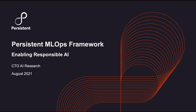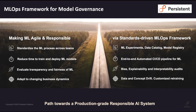At Persistent, we have been talking to customers about Responsible AI and its five pillars, namely: reproducibility, transparency, accountability, privacy, and security. We have various offerings around it. This slide shows what customers are looking for on the left-hand side and Persistent's point of view on the right-hand side. The aim is to make customers' ML development agile and responsible using an MLOps framework that Persistent can build for them.